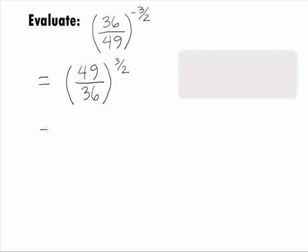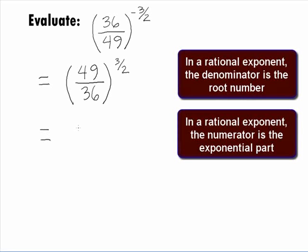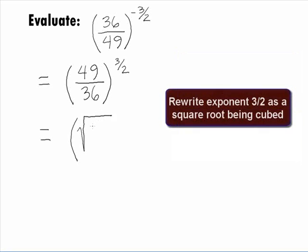Whenever you have a rational exponent, the denominator is the root number and the numerator is the exponential part. So, in our problem, this means the root number on our radical is 2 and the exponent will be 3.